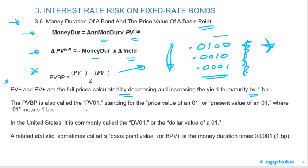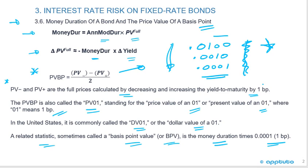The PVBP is also called the PV01, standing for the price value of a 0.1, or present value of a 0.1, where 0.1 means one basis point. In the United States, it's commonly called DV01, or the dollar value of a one basis point change. A related statistic sometimes called basis point value, or BPV, is the money duration times 0.0001 — that's your one basis point. Let's jump in and do five practice questions now.